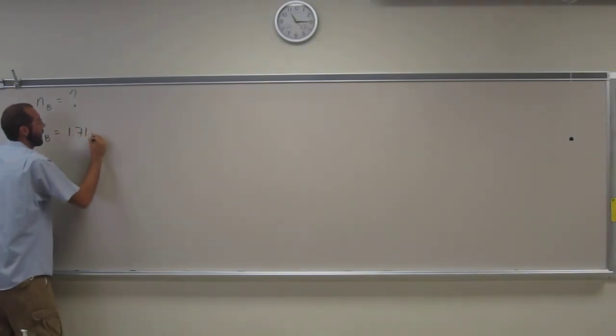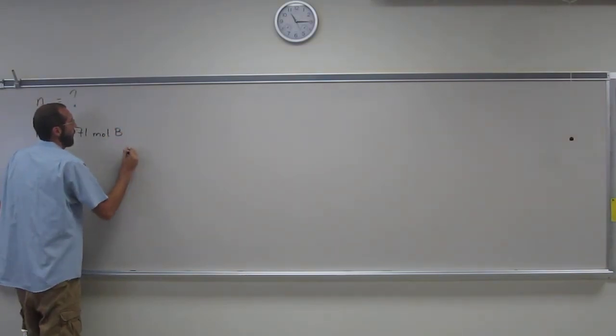Okay, so the first one is calculate the number of atoms in 1.7 moles of boron. So it's asking what is the number of atoms of boron, right? n is amount, which can be number of moles. It gives us the number of moles of boron: 1.71 moles of boron.